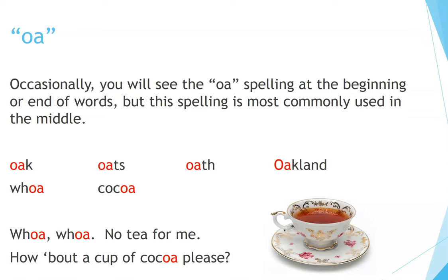OA examples at the beginning of words: Oak, Oats, Oath, Oakland. At the end: Woe, Cocoa. Woe, woe. No tea for me — how about a cup of cocoa, please?